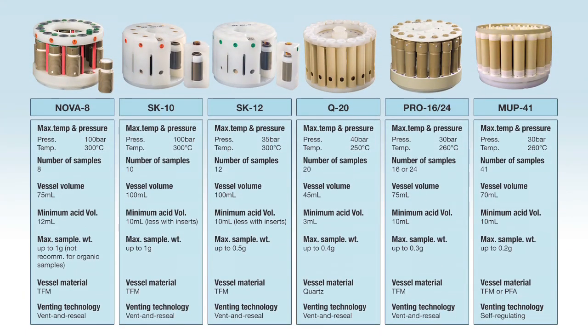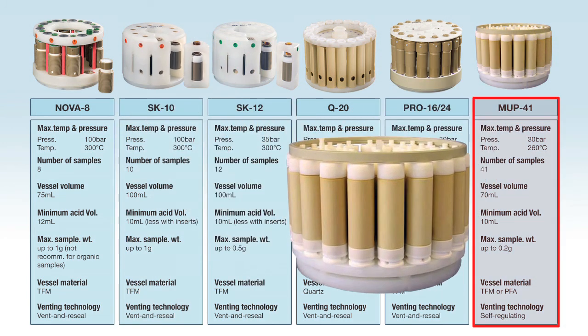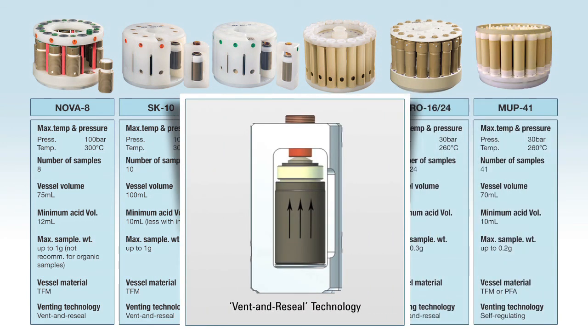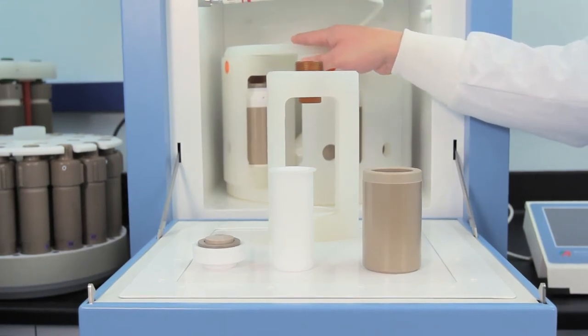The Ethos 1 has the widest range of rotors and vessels to meet every application, including a 100 bar high pressure rotor and high capacity 41 position rotor. Each of these rotors use Milestone's patented vent and reseal technology and can interchangeably be used in the same Ethos without need for changes or upgrades to the system.